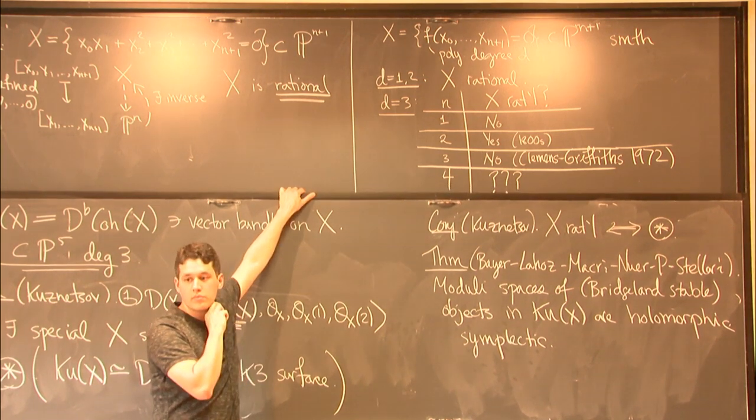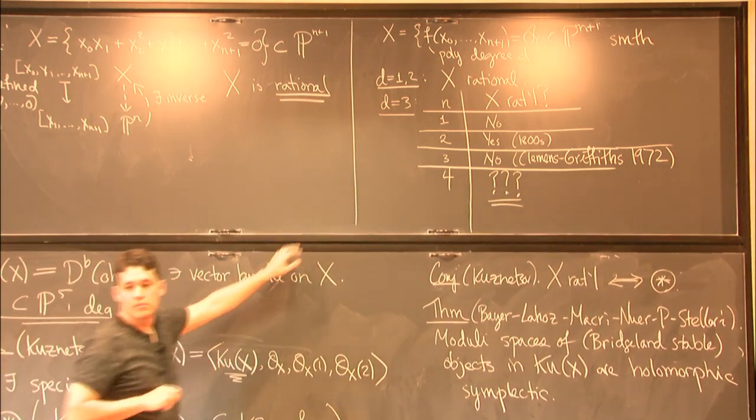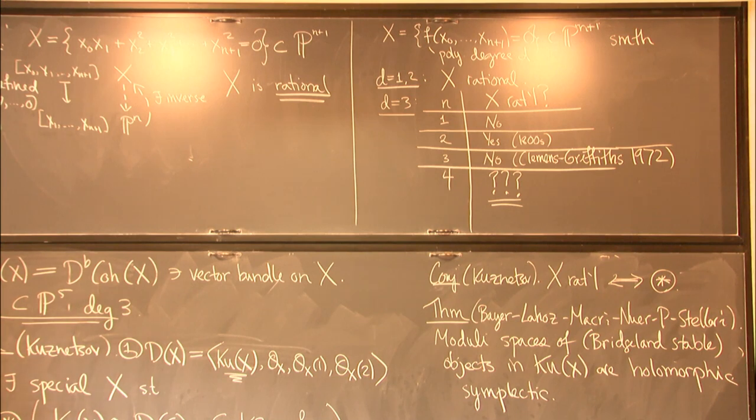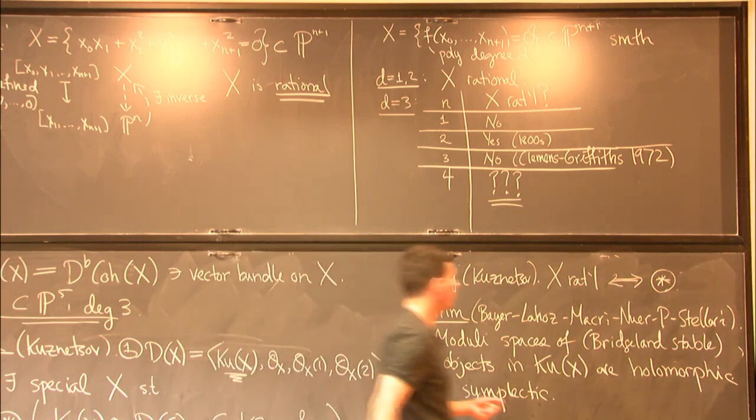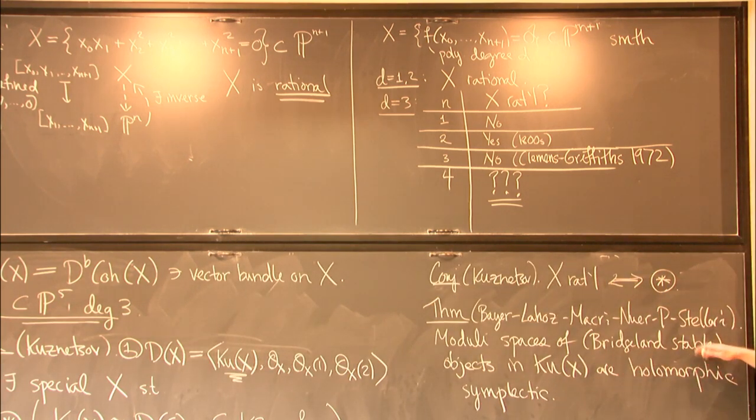For any cubic fourfold. For any cubic fourfold. If you formulate appropriately what you mean by Bridgeland stability condition, then any of those moduli spaces are holomorphic symplectic. Yeah, so a Bridgeland stability condition, it's a kind of data which allows you to formulate well-behaved moduli spaces in a category, objects in a category. And our work is really about some general things about Bridgeland stability, and we can apply it in this case of cubic fourfolds to get this result.